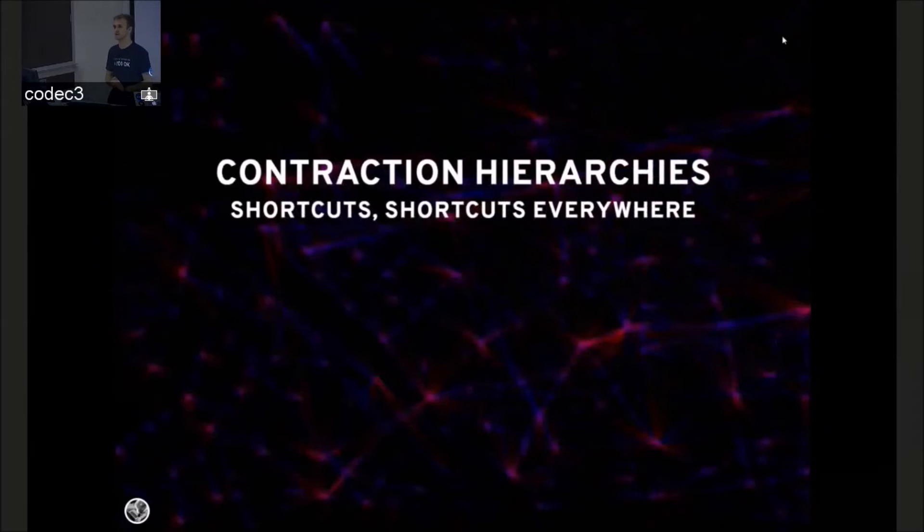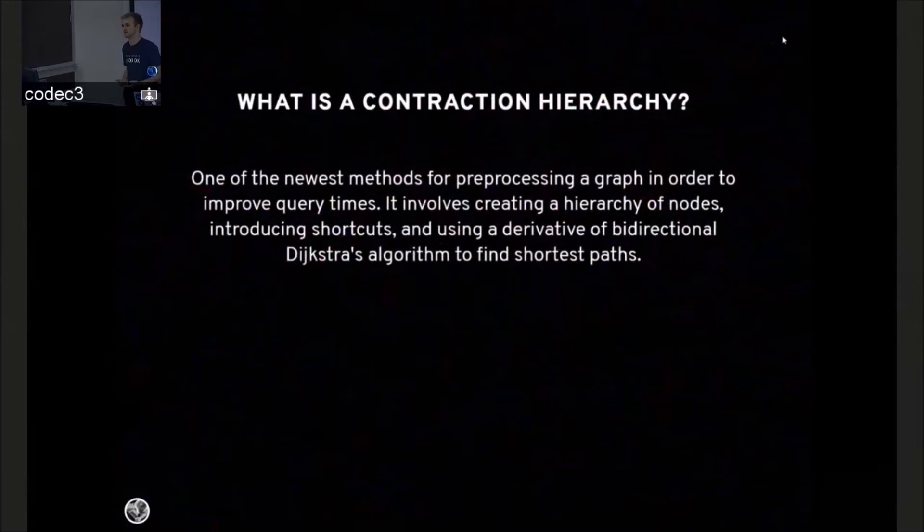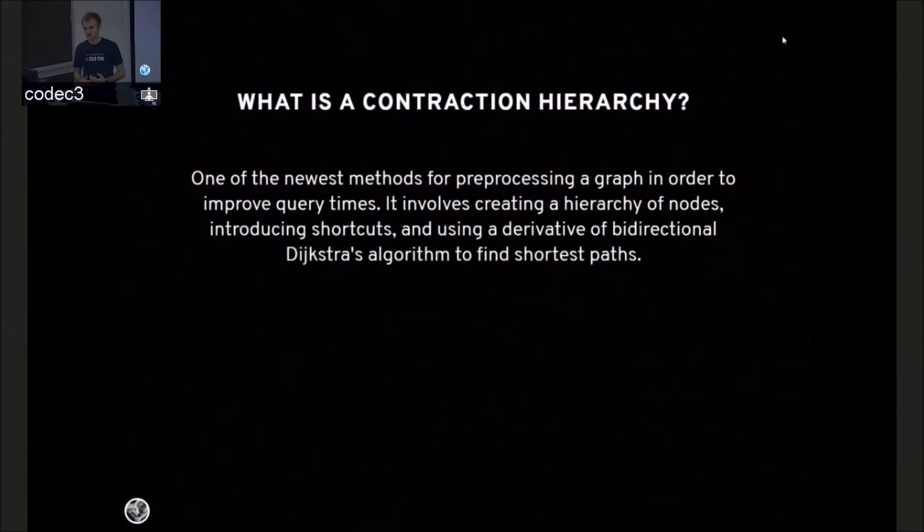So I want to talk about contraction hierarchies. What is a contraction hierarchy? It's one of the newest methods for pre-processing a graph in order to improve query times. We're speaking about very large graphs. It involves creating a hierarchy of nodes, adding shortcuts, and using a derivative of bidirectional Dijkstra's algorithm.